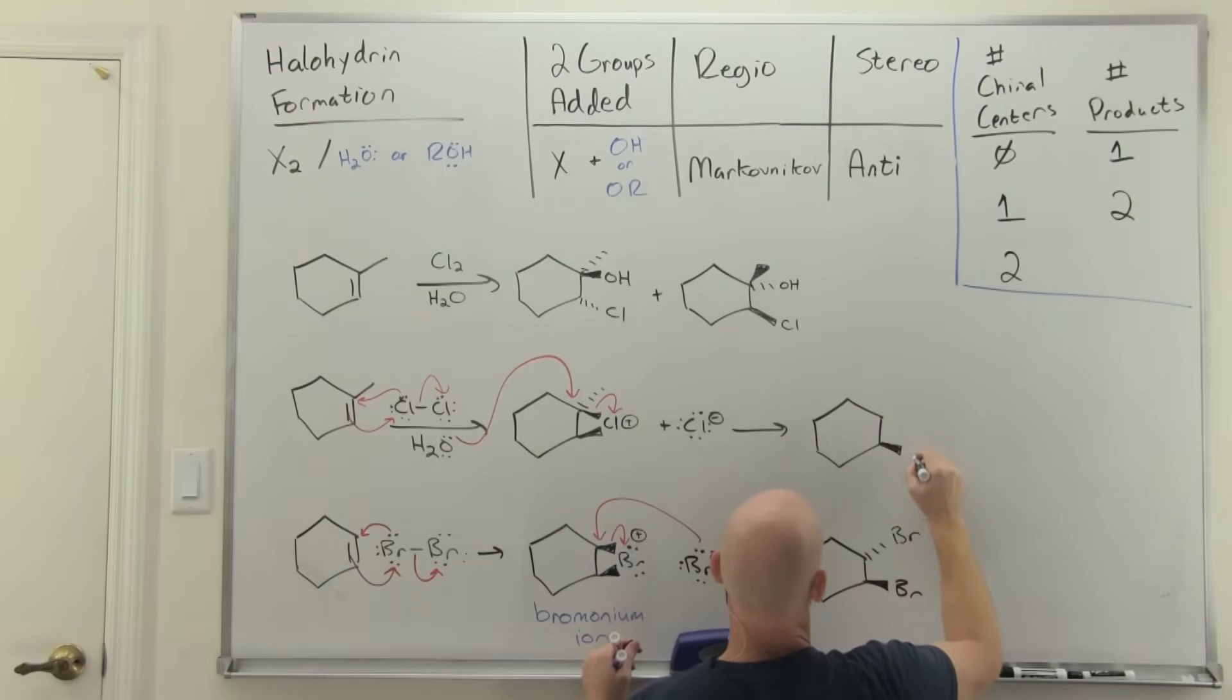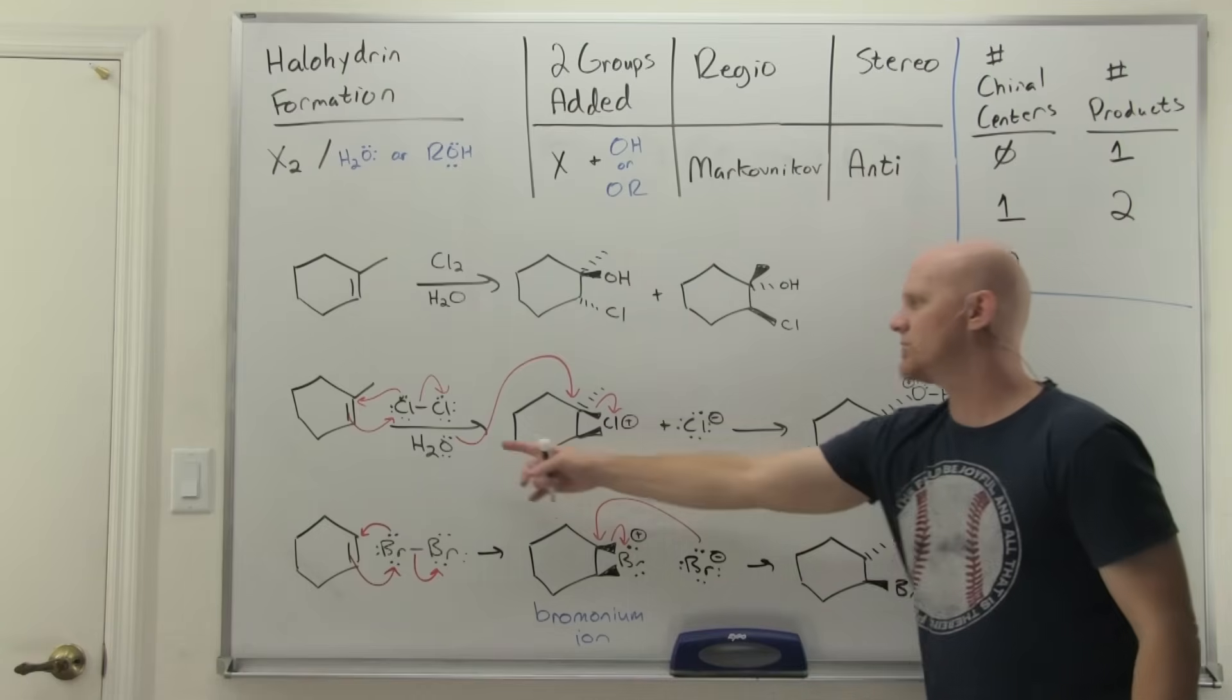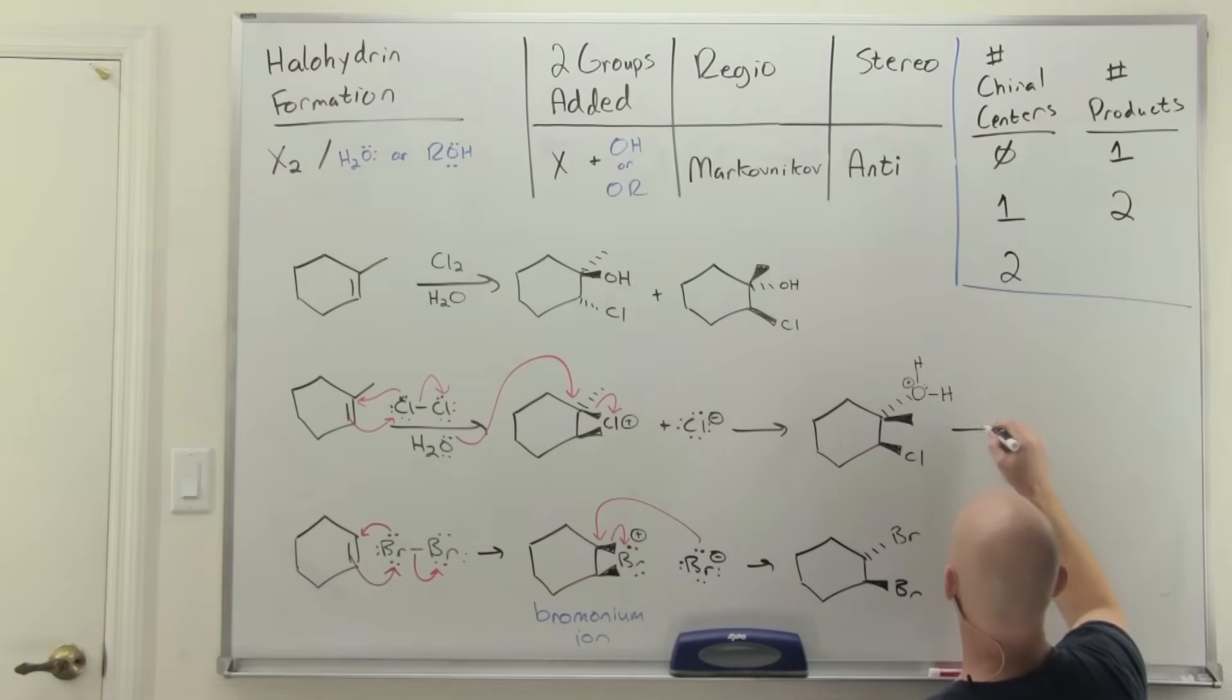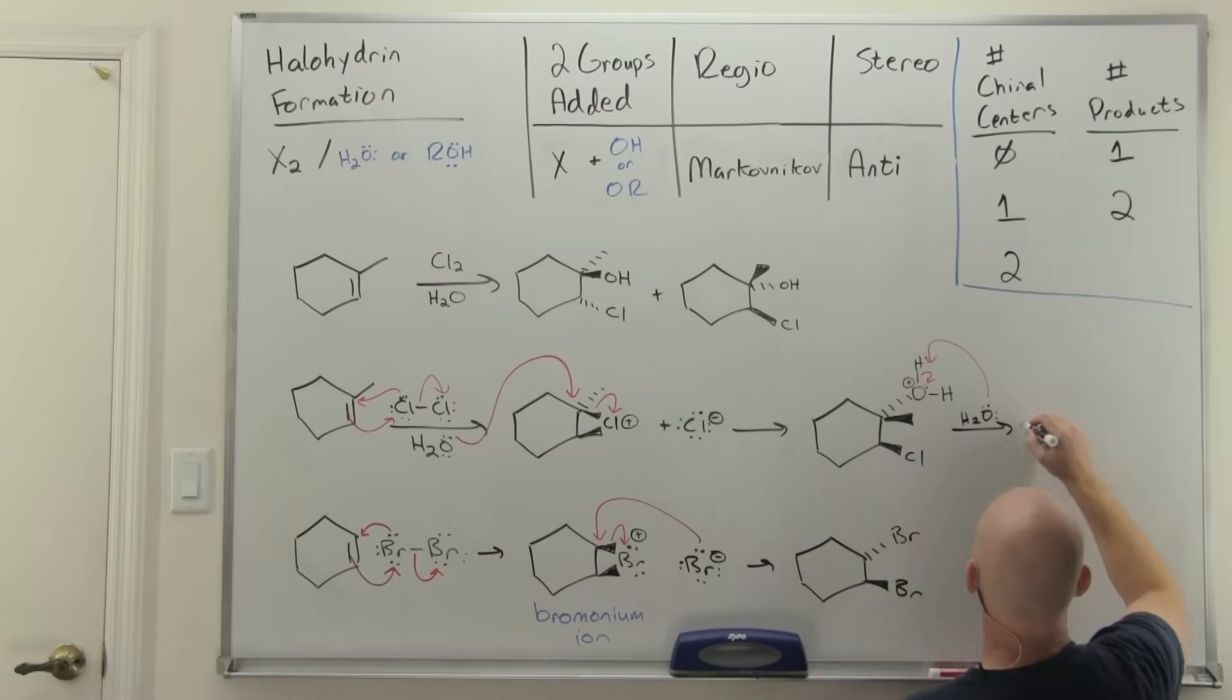Chlorine's still going to be attached to the other carbon, still as a wedge. On this carbon where we did backside attack, the chlorine was a wedged bond, the leaving group there. The OH is going to be where the water attaches as the dash. That flip, inversion takes place, Walden inversion, causing the methyl group that used to be a dash to now be the wedge instead. When you've got a neutral nucleophile attacking and attaching and ending up with a positive formal charge, you'll have another molecule of the solvent deprotonate. We'll bring in another water molecule. There is one of our products.